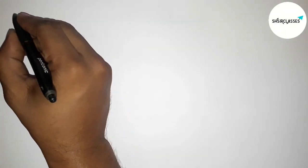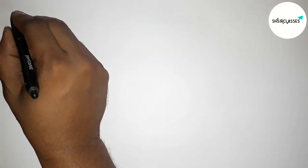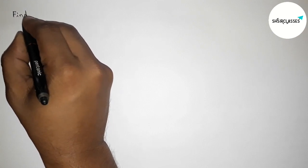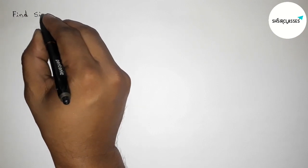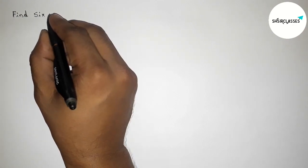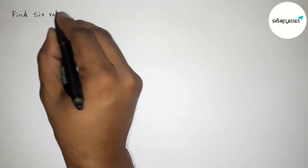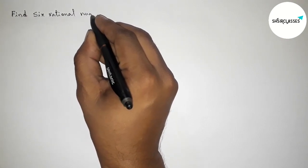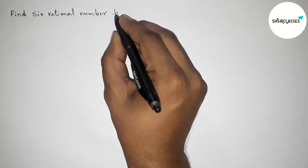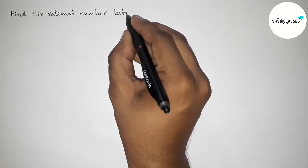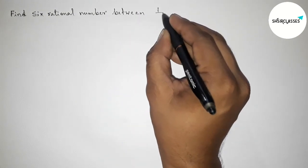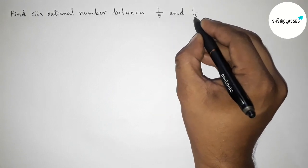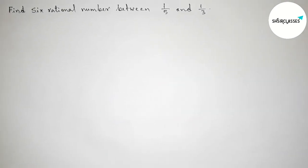Hi everyone, welcome to SI Share Classes. Today in this video we have to find six rational numbers between 1/5 and 1/3 in an easy way. So please watch the video till the end. Let's start.